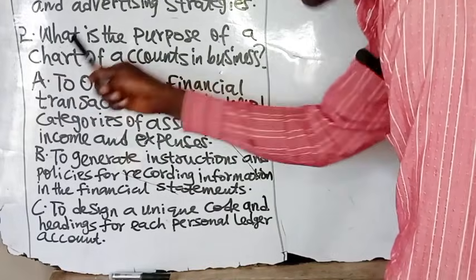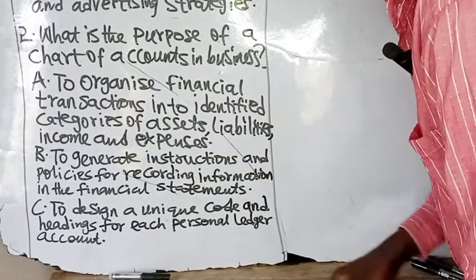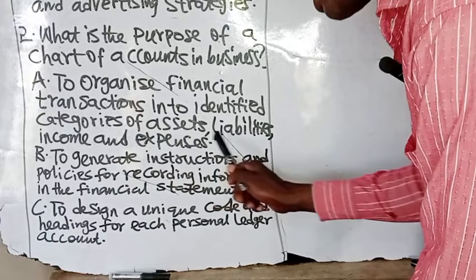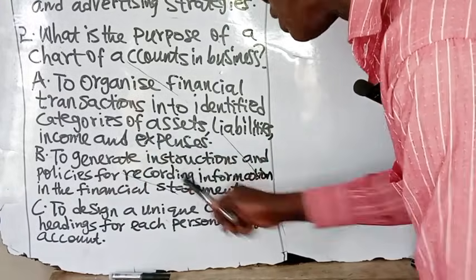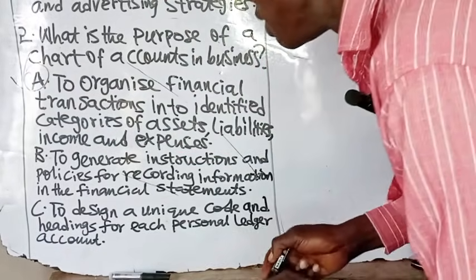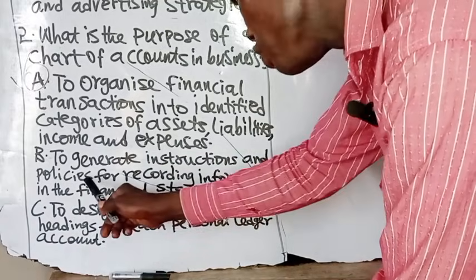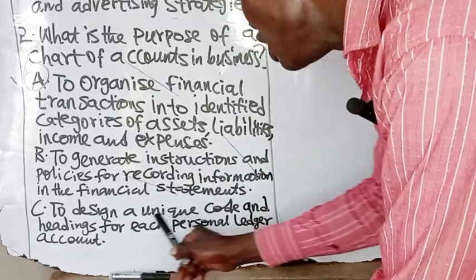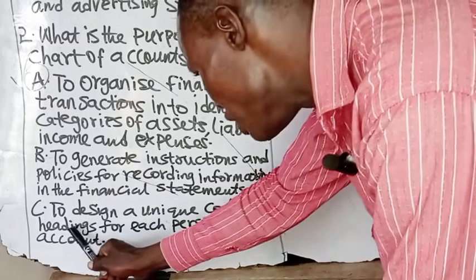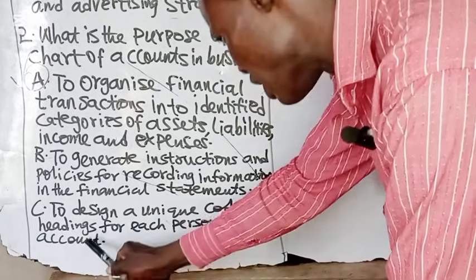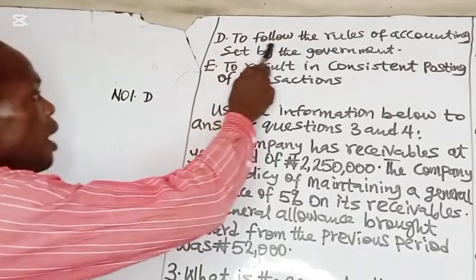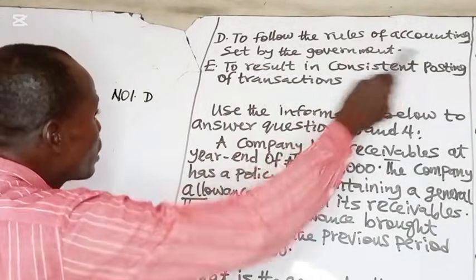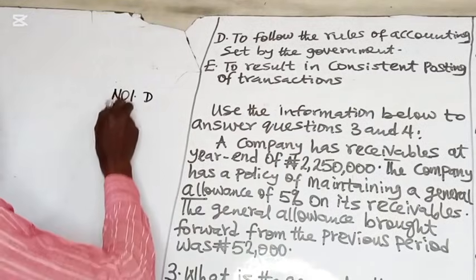Number 2: What is the purpose of a chart of accounts in business? Option A: to organize financial transactions into identified categories of assets, liabilities, income, and expenses — this is correct. B: to generate instructions and policies for recording information in financial statements — no. C: to design a unique code and headings for each personal ledger account. D: to follow the rules of accountants set by the government — no. E: to result in consistent posting of transactions. The correct answer to number 2 is A.